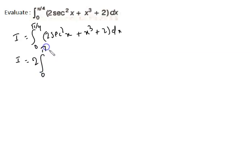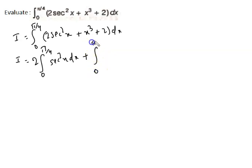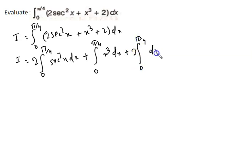After taking 2 common from the first term, we write: 2 times the integral from 0 to π/4 of sec²x dx, plus the integral from 0 to π/4 of x³ dx, plus 2 times the integral from 0 to π/4 of 1 dx.